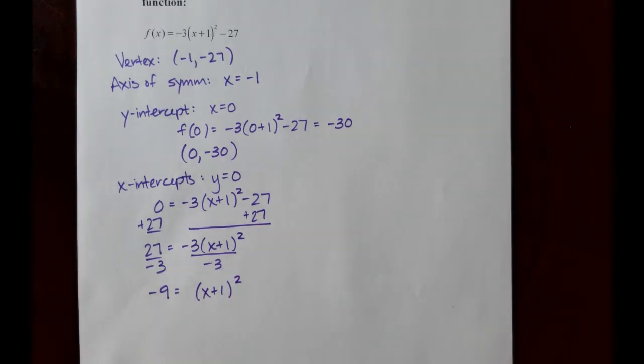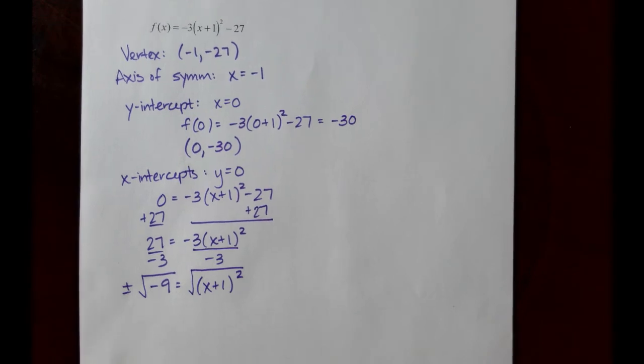And that gives us negative 9 equals x plus 1 quantity squared. Getting closer to the x-coordinates for your x-intercepts, we'll take the square root of both sides of the equation, being very careful to make sure we take plus or minus the square root of negative 9. And when you do that, you should notice that we're taking a square root of a negative number.